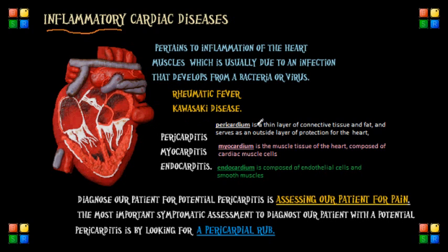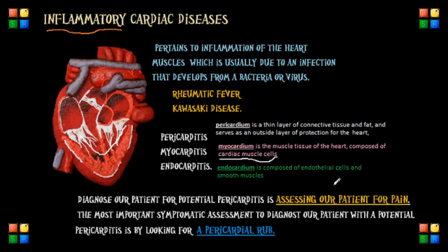The pericardium is the thin layer of connective tissue and fat and serves as more of a protective layer for the heart — it's the outside layer. Under the pericardium is the myocardium, which is the muscle tissue of the heart, usually composed of cardiac muscles. These muscles contract, and the conduction of electricity coordinates with that contraction.